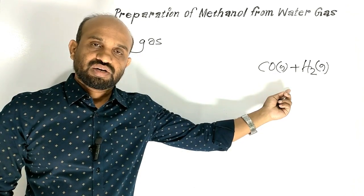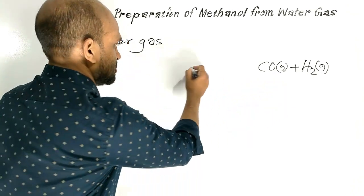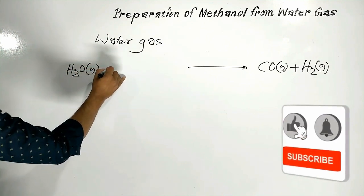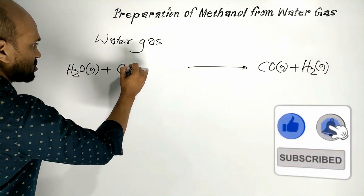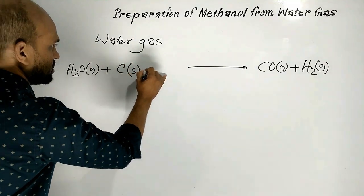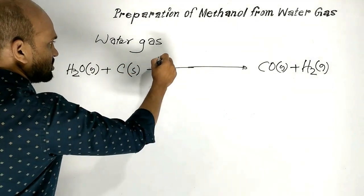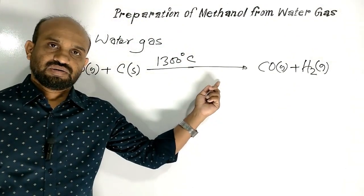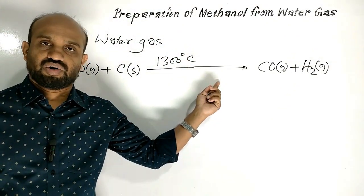Water Gas is prepared by passing steam over red hot coke at around 1300 degree Celsius temperature. Then Water Gas is formed.